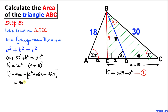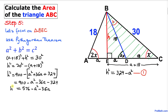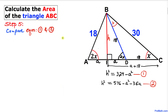Opening the bracket: H² = 900 − A² − 36A − 324. Combining like terms: H² = 576 − A² − 36A. I'll call this equation number two.